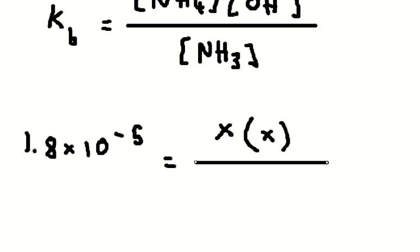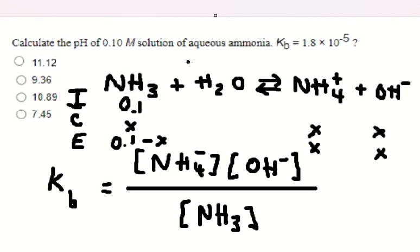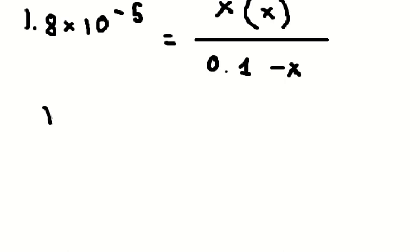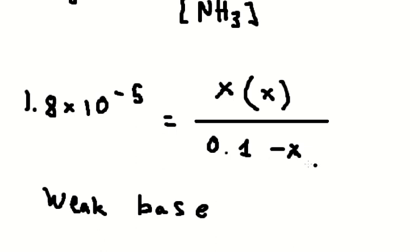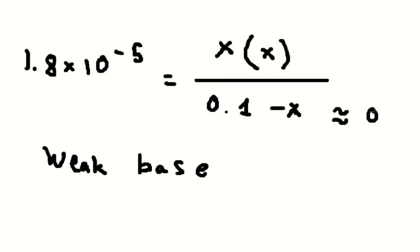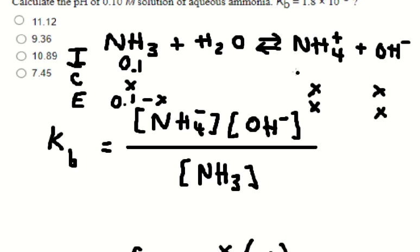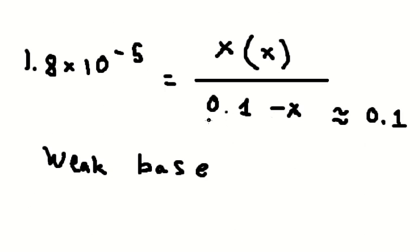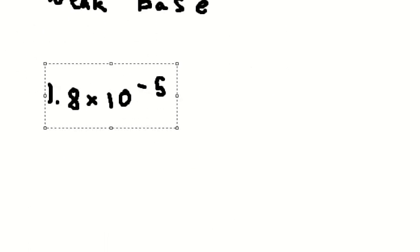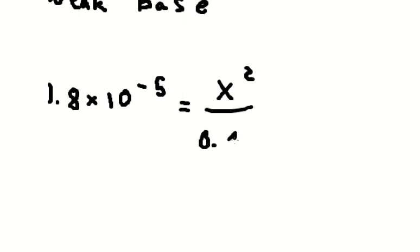So because this one is about the weak base, 0.1 minus S is similar about 0.1 because they create about this ion very small. So that's why we can transform this one into this one.